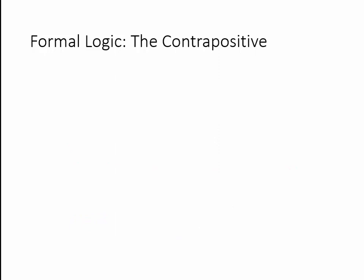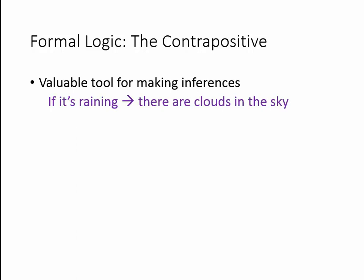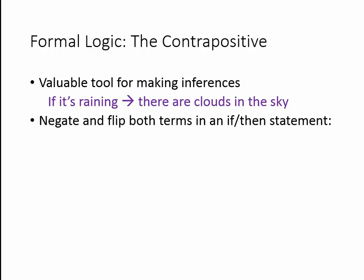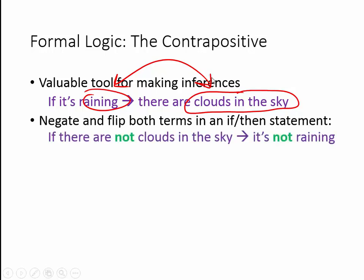Now let's look at how you can form the contrapositive of a statement like that. We'll take our basic phrase: if it's raining, then there are clouds in the sky. What we're going to do is negate it and flip both terms. This gives us the contrapositive, which is also a true statement and very helpful for making inferences in logic games. So we switch the positions of clouds and rain and add 'not' to each one. Our correct contrapositive becomes: if there are not clouds in the sky, then it's not raining.